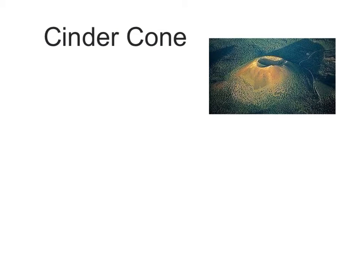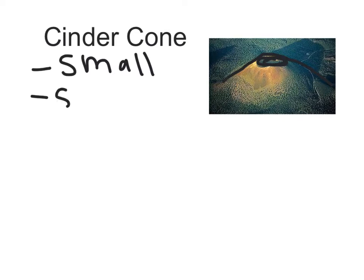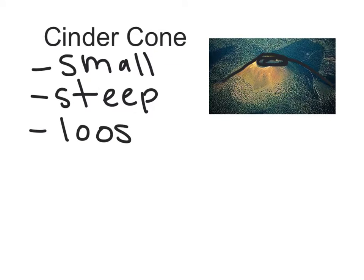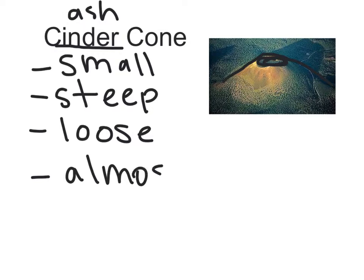The first one is called the cinder cone. If you look at the shape of a cinder cone, it's very steep and it has a large crater at the top — a crater is a hole. The cinder cone is a small volcano with very steep sides. It's made of loose, grainy pieces of volcanic rock and ash. That's why it's called a cinder cone, because cinder means ash and ash material. Another thing about a cinder cone is that it has almost no lava — there's very little lava in a cinder cone.